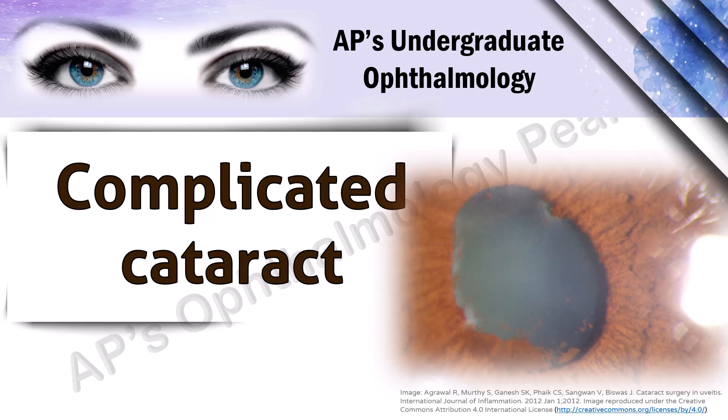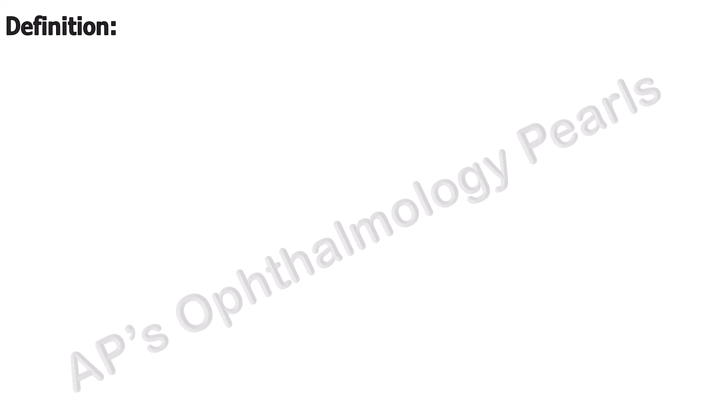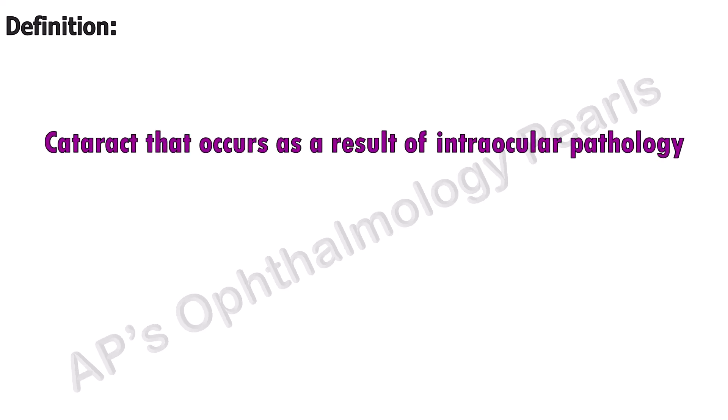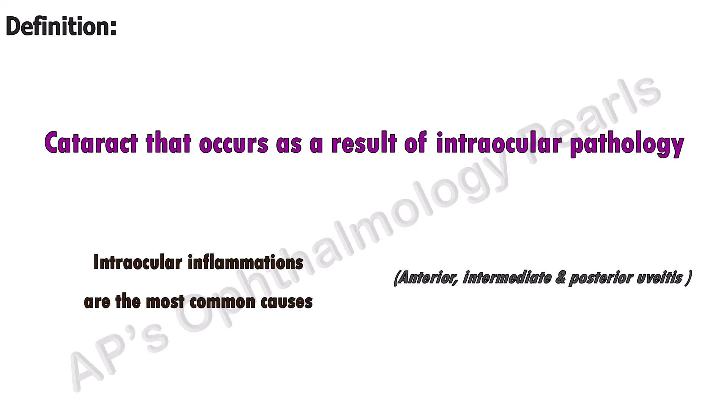Complicated cataract is a frequent short note for undergraduate examinations. Complicated cataract occurs following intraocular pathology. Intraocular inflammations — anterior, intermediate, and posterior uveitis — are the most common causes.